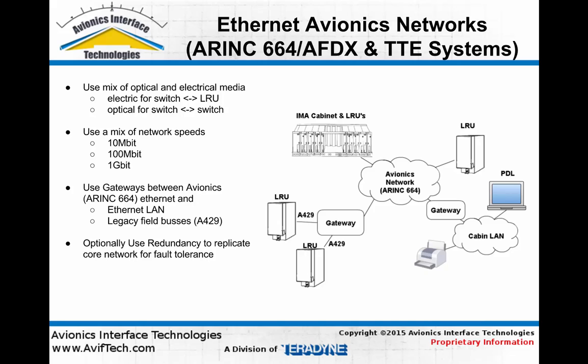Another node type found in ethernet-based avionics systems are gateways. These gateways are used as a way to give legacy equipment, which only supports legacy protocols such as ARINC 429 or CANBUS, a path to communicate via the switched ethernet network to other LRUs.